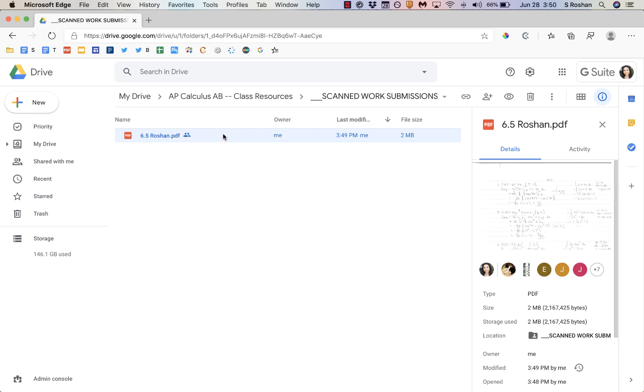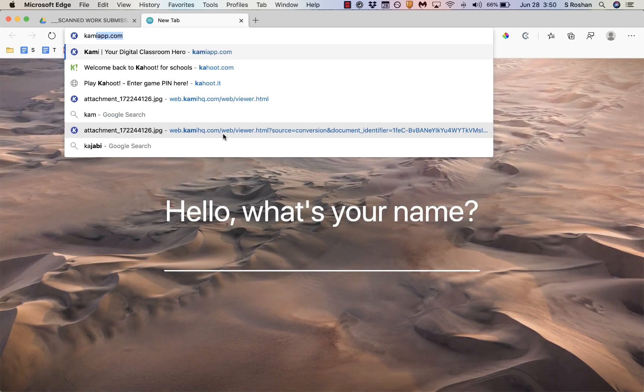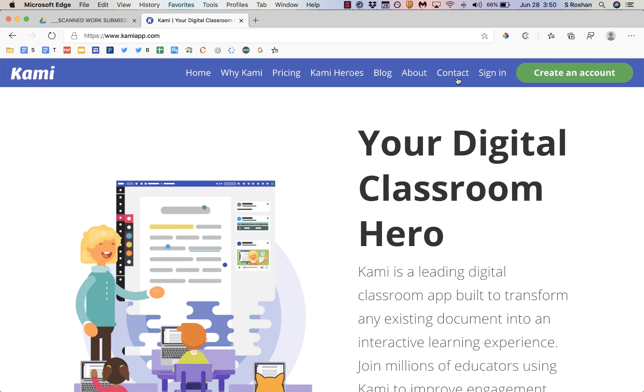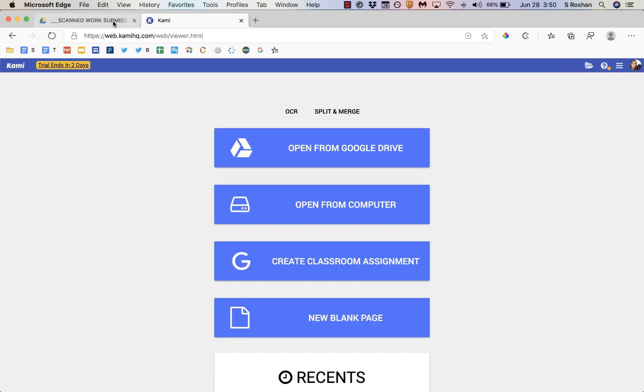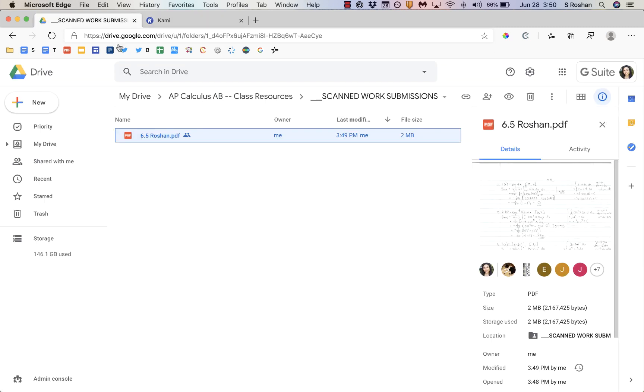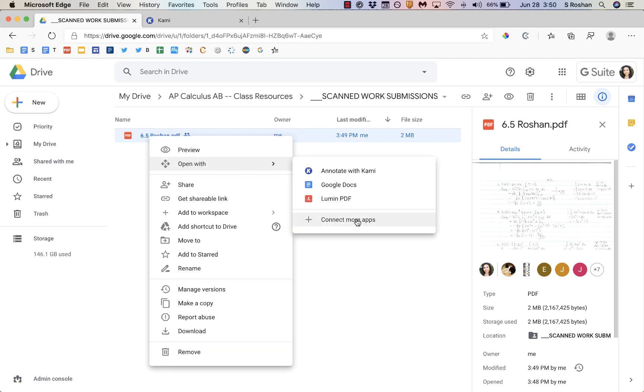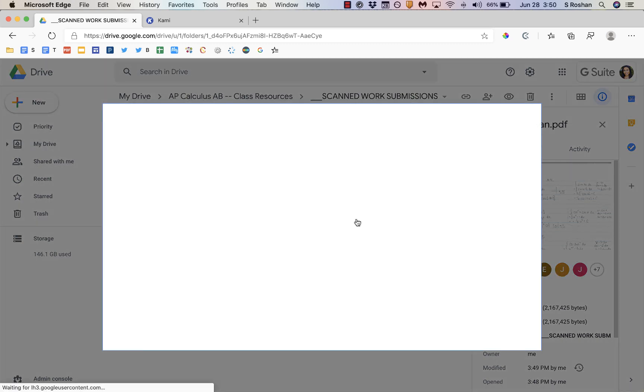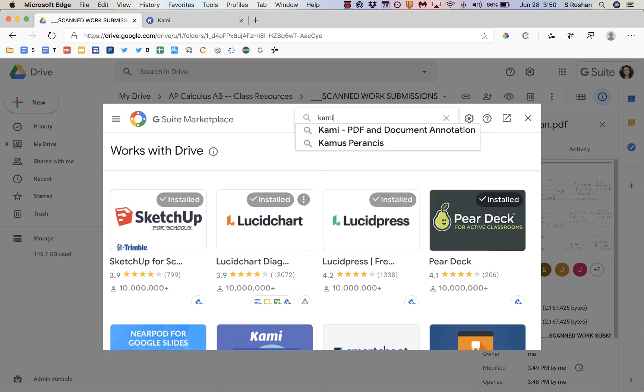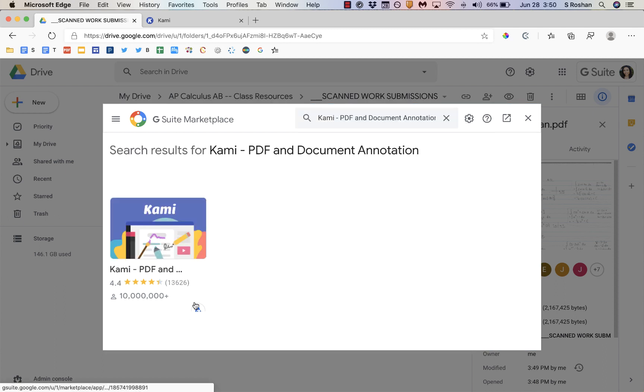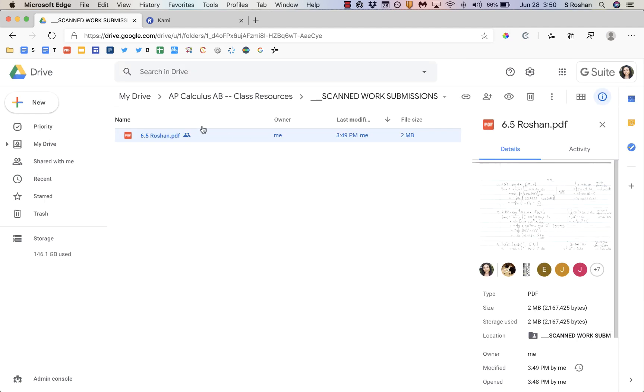How do I get that started for the first time? I recommend going to KamiApp.com and creating an account. After you do that, you can just go back to your Google Drive, right-click, go to open with, and then connect more apps. From there, you can just search for Kami and add it to your Google Drive.